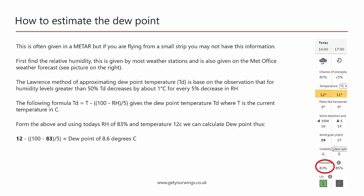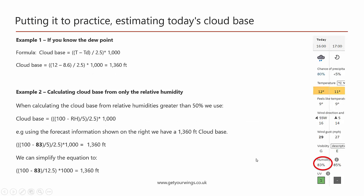Looking at today's humidity and temperature from the Met Office, we have a temperature of 12 degrees C and a humidity of 83. Plugging those values into the formula gives us a dew point of 8.6 degrees C. To practice estimating today's cloud base using the dew point, we use the formula: temperature minus dew point, divided by 2.5, times 1000. That gives us a cloud base of 1360 feet.